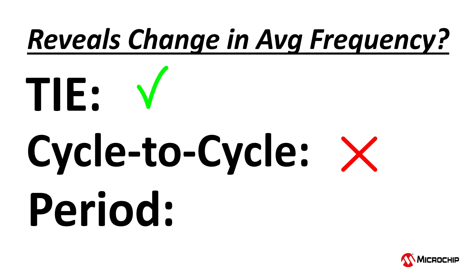And lastly, how about period jitter? Recall that period jitter is also called long-term jitter, and there is good reason for this. Period jitter is measured over tens of thousands of periods, not just two adjacent periods as is the case with cycle-to-cycle jitter. Measuring this many periods would certainly reveal a drift or a jump in the clock frequency.